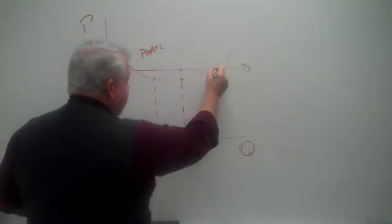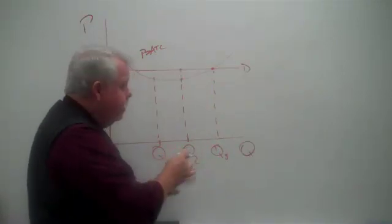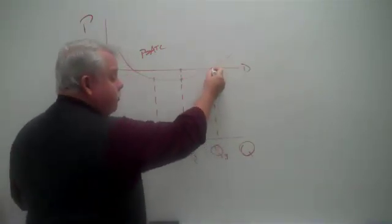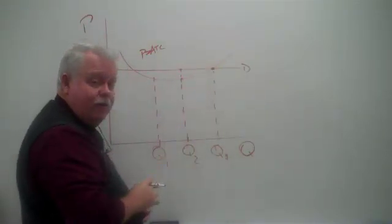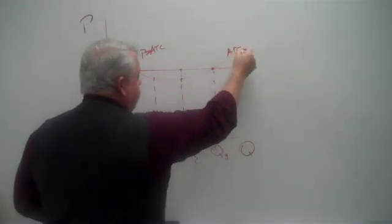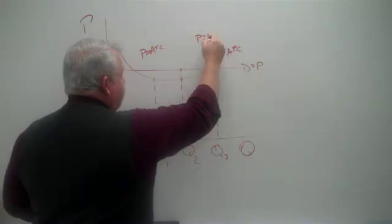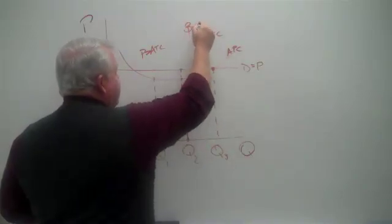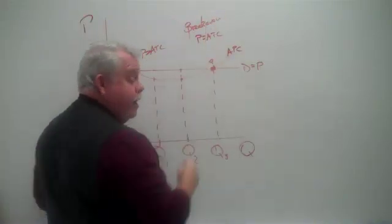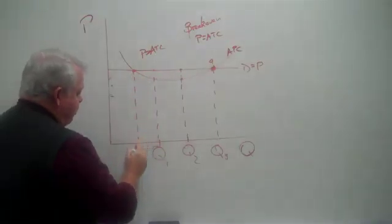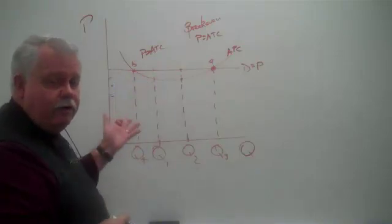What's going on out here at Q3? At Q3 level of output, if they were to choose that, their total cost or average cost would be the same as their total revenue. That is, their average total cost would be the same as their price. When that's true, when price equals average total cost, we say the company is breaking even. So the company breaks even here at point A, and by the way, it would also break even if it produced over here, Q4, at point B. Both those would be break even points. Total revenue equals total cost.